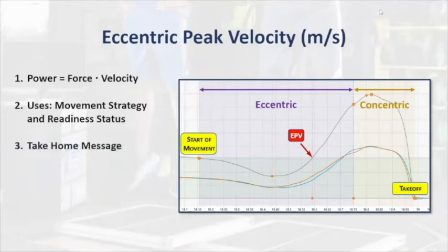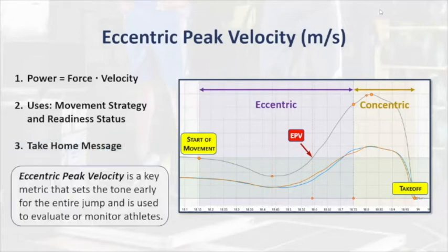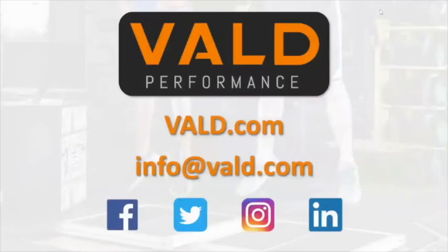A simple take-home message is that eccentric peak velocity is a key metric that sets the tone early for the entire jump and is used to evaluate or monitor athletes. For more information, have a look at evolve.com, send us an email, or reach out to us on any social media platform.